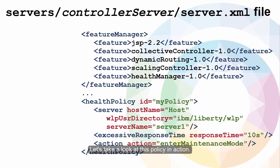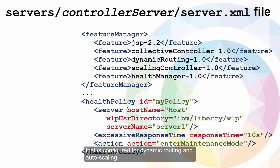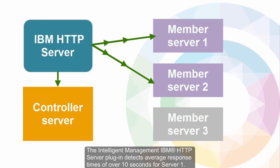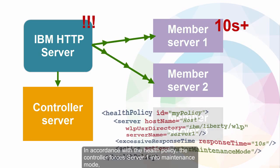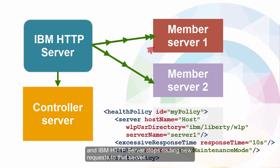Let's take a look at this policy in action. The Health Manager feature is enabled in a collective controller that's configured for dynamic routing and auto-scaling. The Intelligent Management IBM HTTP Server plugin detects average response times of over 10 seconds for Server 1. In accordance with the health policy, the controller forces Server 1 into maintenance mode, and IBM HTTP Server stops routing new requests to that server.